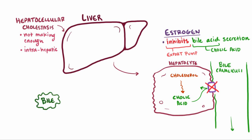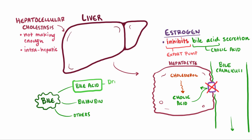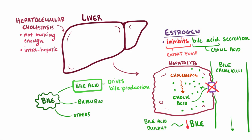But bile acids are just one component of bile. Wouldn't the bile still be made, just without the bile acids? Well, production and secretion of bile acids is actually a major driving force for the synthesis of bile in the hepatocytes. So when the cells can't transport the bile acids and they start to build up inside the cell, this is basically a signal to down-regulate bile acid synthesis and excretion of bile altogether, which decreases the total amount of bile production.